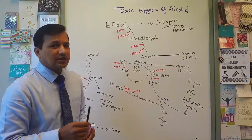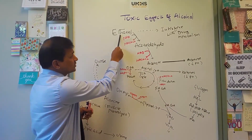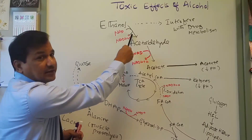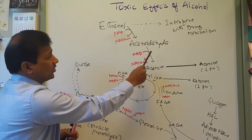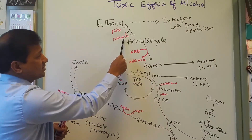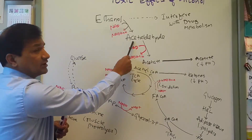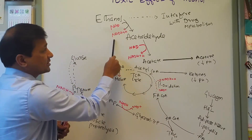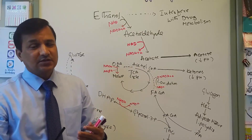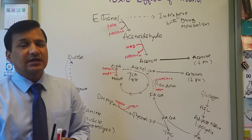Let's begin with the metabolism of alcohol. Ethanol is converted to acetaldehyde by the alcohol dehydrogenase enzyme in the cytoplasm, where NAD+ is converted to NADH+H+. When alcohol metabolism is ongoing, a lot of NADH+H+ is produced in the cytoplasm and NAD+ is consumed, so there will be a shortage of NAD+ in the cytoplasm and an excess of NADH+H+.